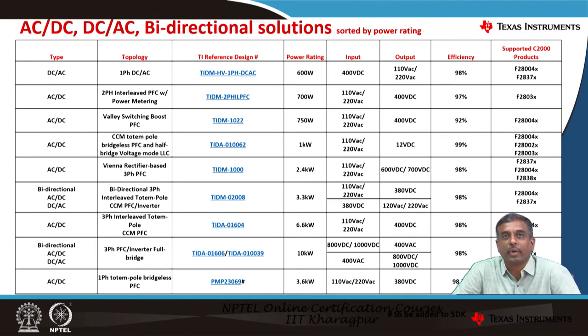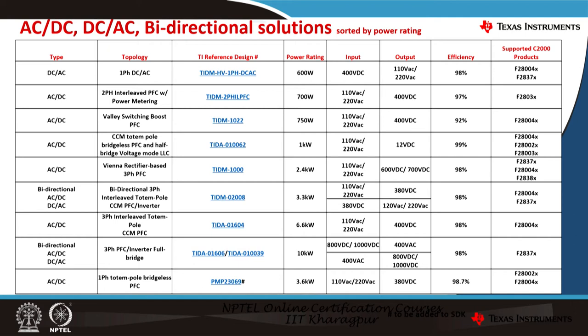TI provides a quite long list of reference designs to help you quickly start your design. Looking at the list of AC-DC and DC-AC bidirectional solutions, we support a whole lot of topologies available out of the box — meaning software and hardware are available to evaluate any topology such as single-phase DC-AC, two-phase interleaved PFC, valley switching boost PFC, VNF rectifier-based three-phase PFC, and bidirectional three-phase interleaved totem pole. The reference design numbers are listed in the third column, and power ratings range from 600 watts to all the way to 10 kilowatts.